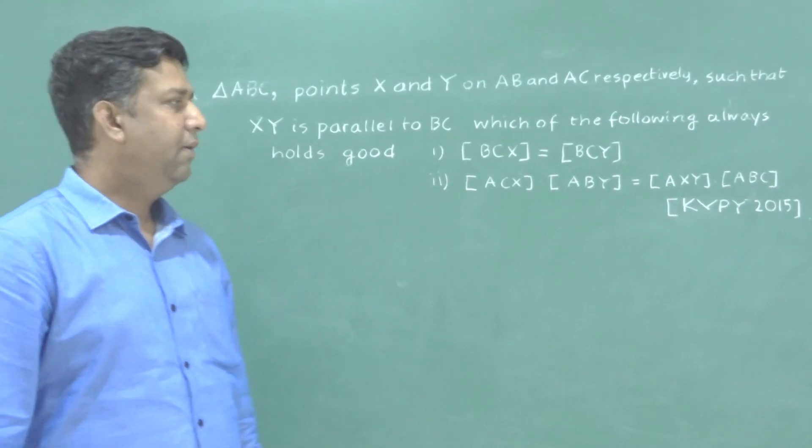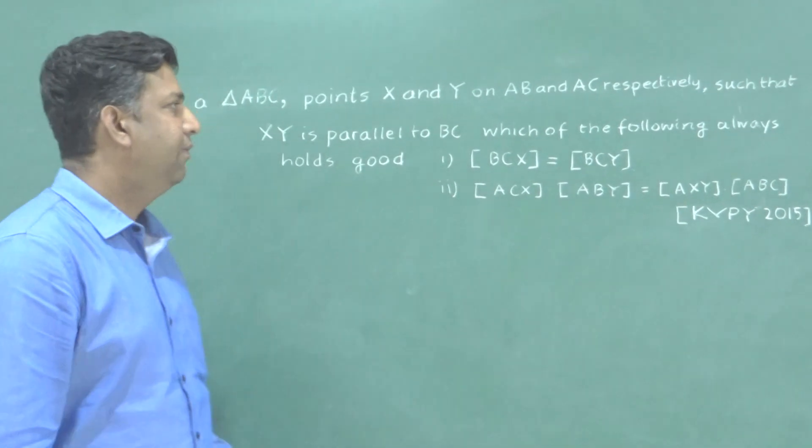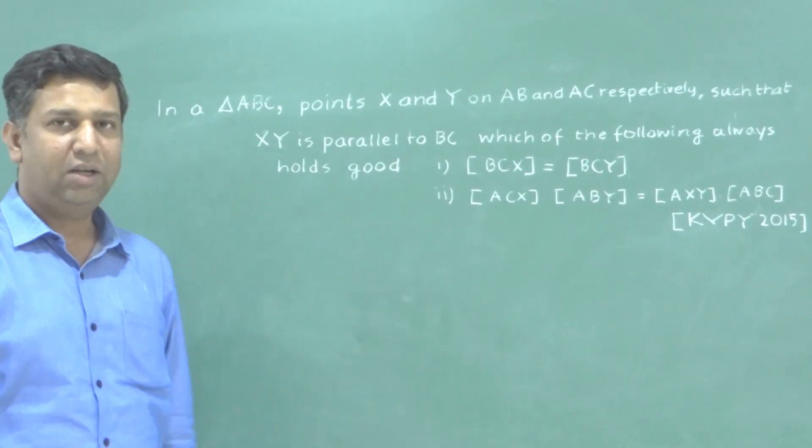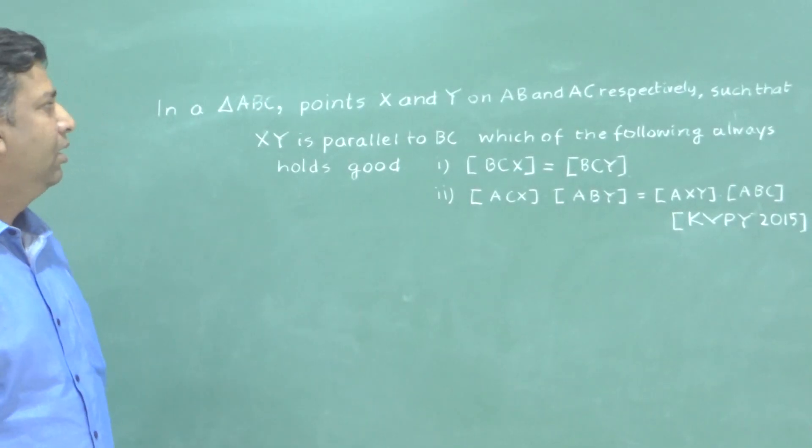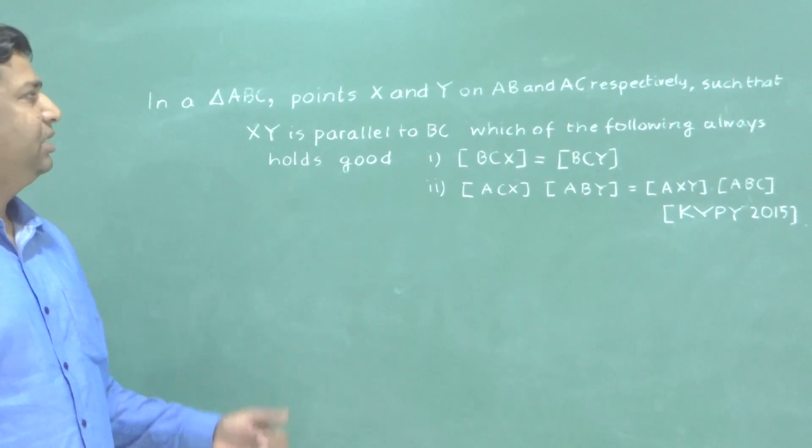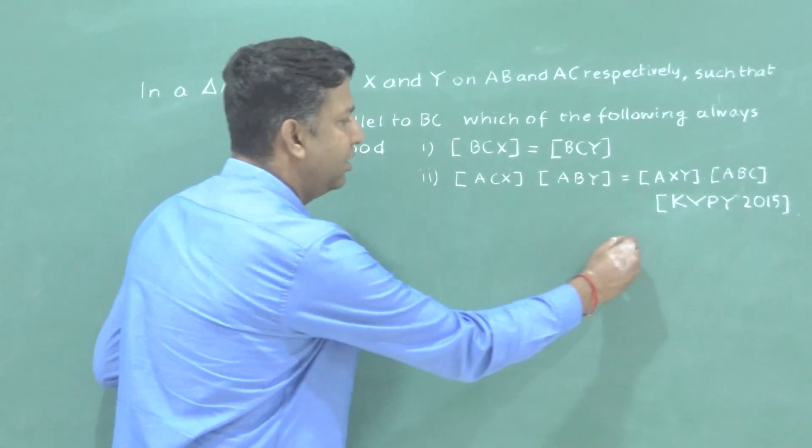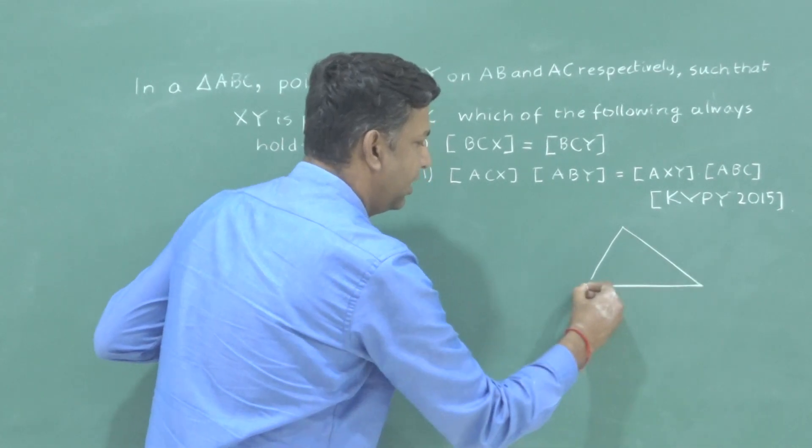This problem came in 2015 KVPY. It's a very interesting problem and I'm going to solve it in a very different way. The question says that ABC is a triangle. I'm going to draw it. ABC is a triangle.